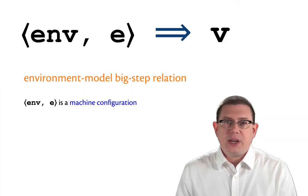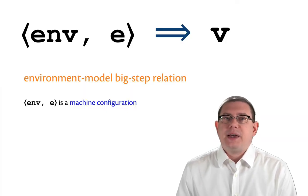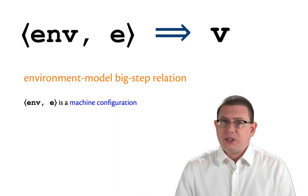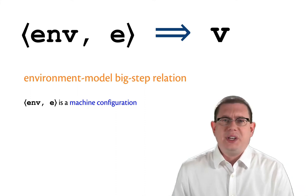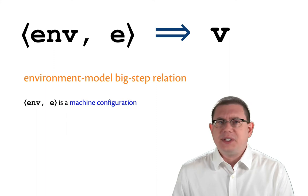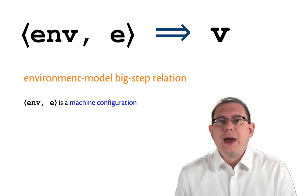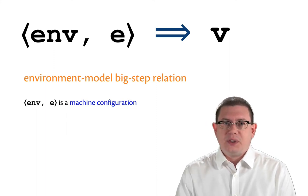Now I've chosen these funny looking angle brackets to emphasize the fact that even though this kind of works a little bit like a pair, it's not truly an OCaml pair. This is not OCaml syntax we're using here. This is a mathematical syntax we're using to define this relation.